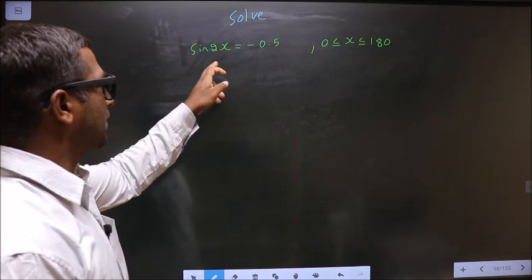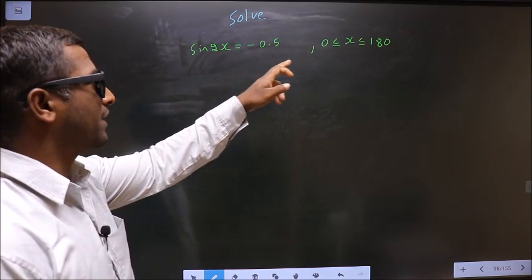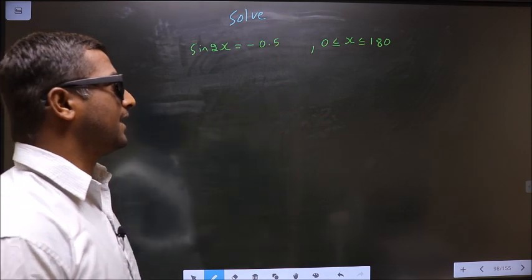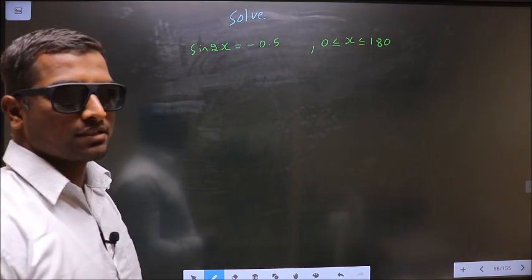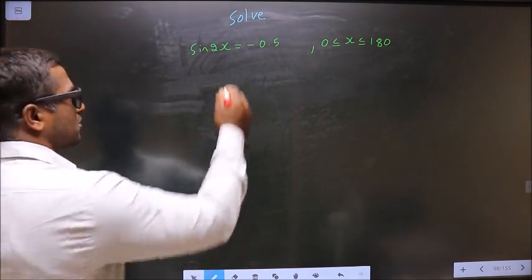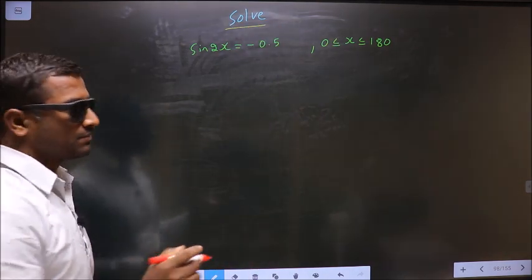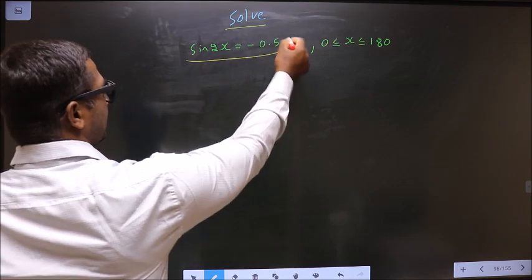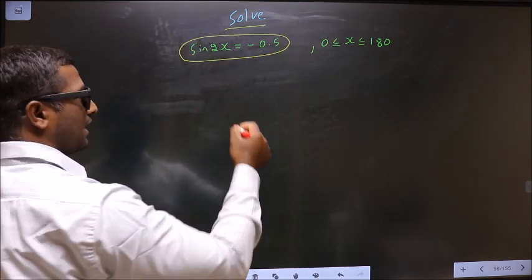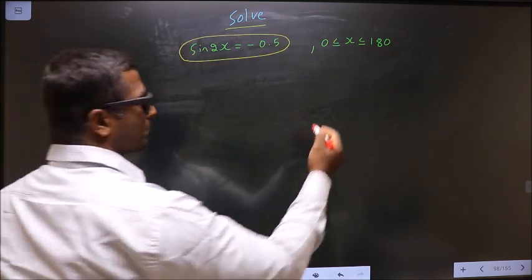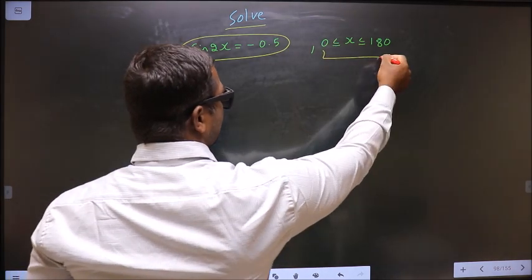Solve sin 2x equal to minus 0.5 where x lies in the interval 0 to 180 degrees. They told you to solve, so you should find the values for x satisfying this equation and also it should lie in the interval 0 to 180.